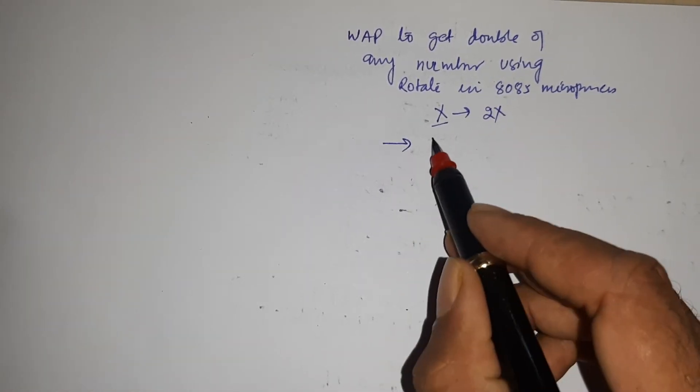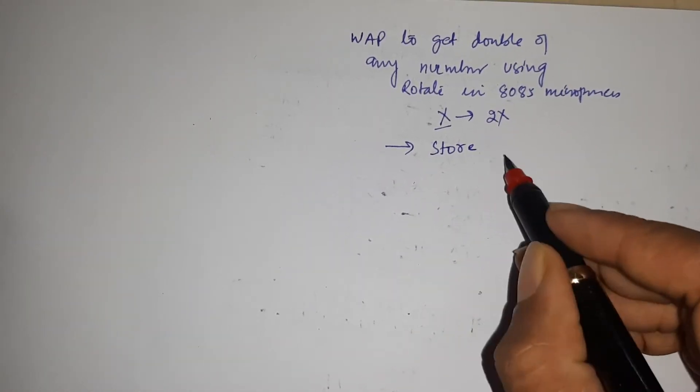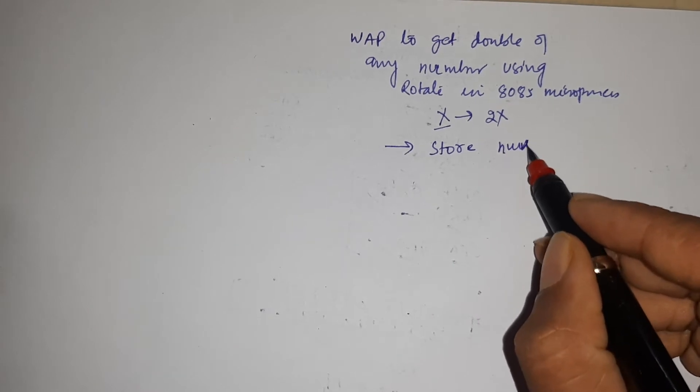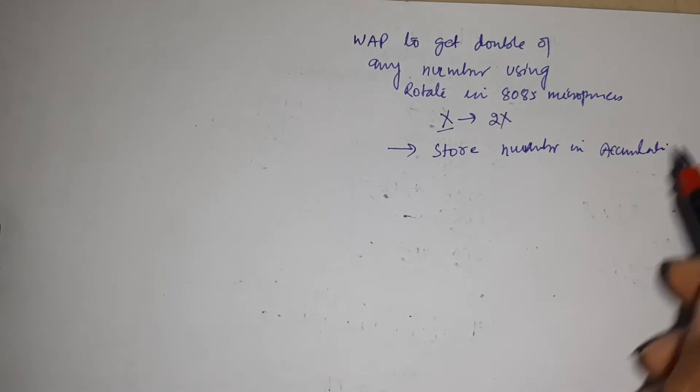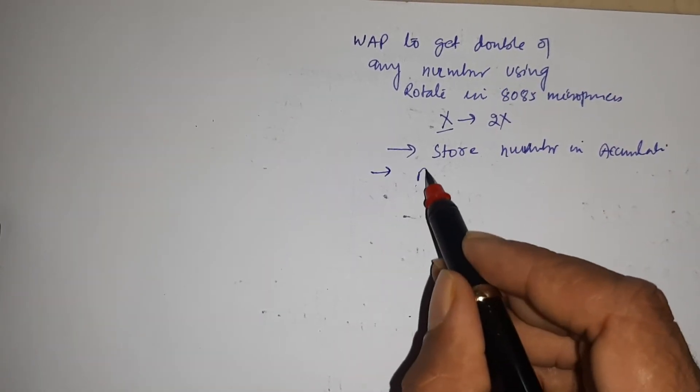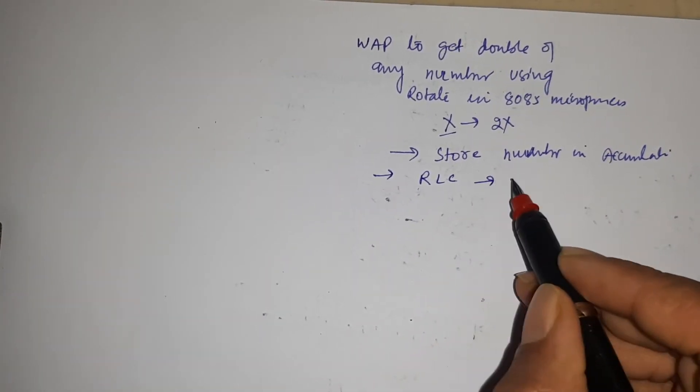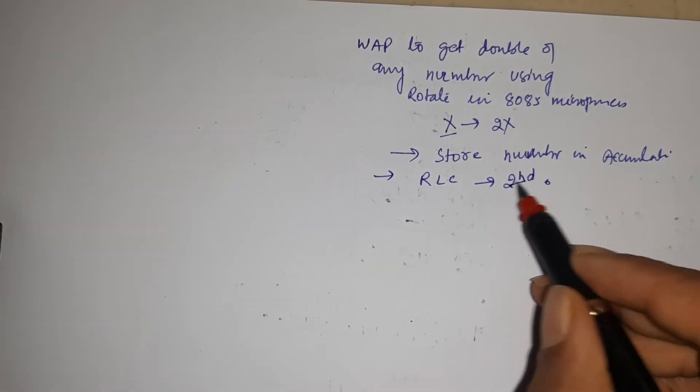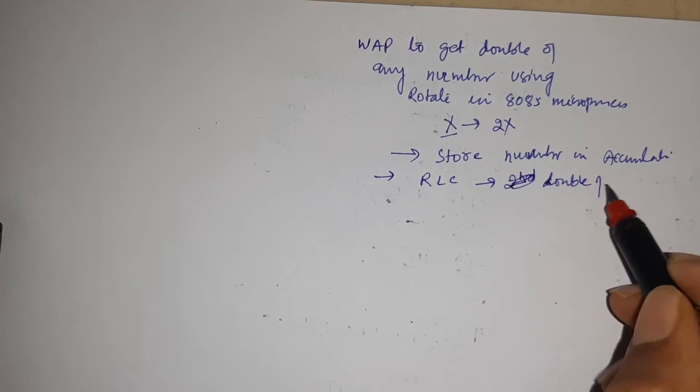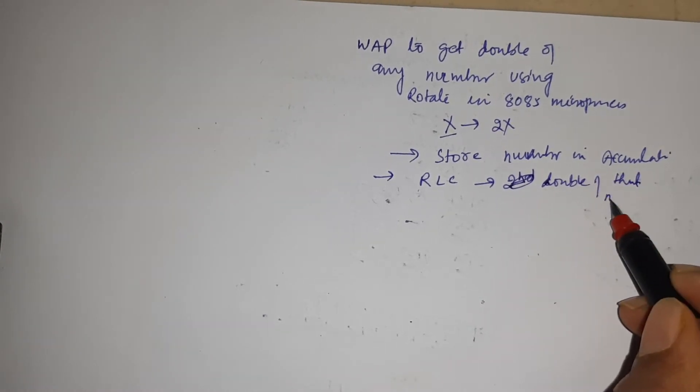Firstly, you have to store the number in accumulator and apply RLC one time. And then you can get double of that number.